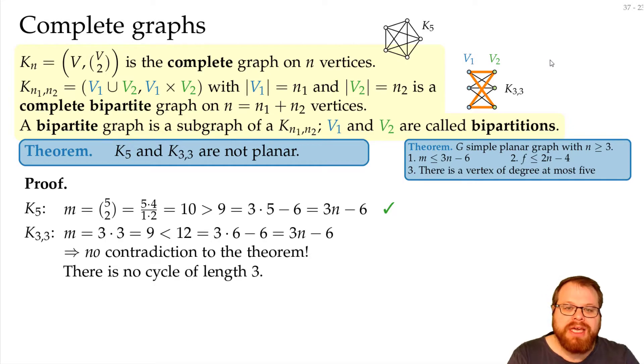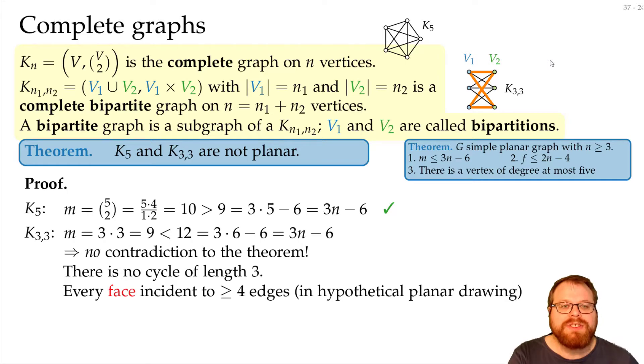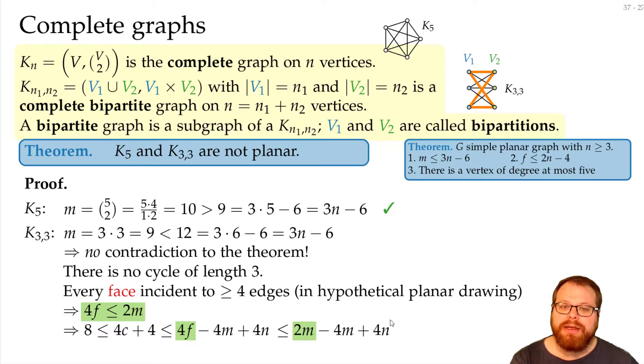So we can do the same calculations as before, but we just change the number slightly. Now we have 4 times the number of faces is at most 2 times the number of edges. And if we plug this in to all the formulas, then this tells us in the end that we have at most 2n-4 edges.